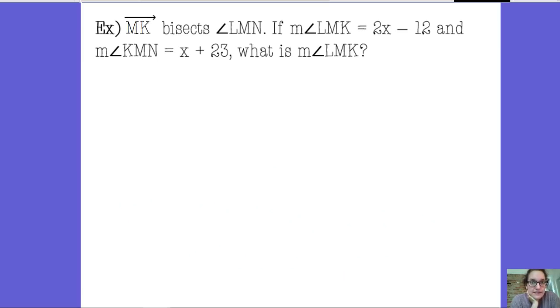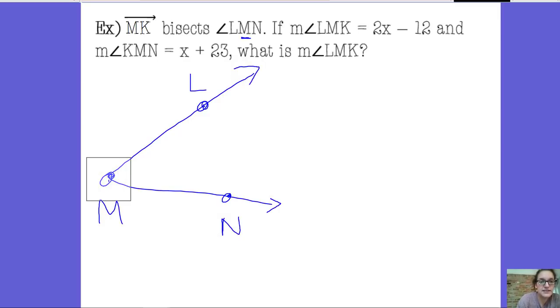So you're going to need to copy down this example into your notebook underneath that colored square, and then follow along with me and take notes. So it says Ray MK bisects angle LMN. So notice when I'm going to draw this angle, my middle letter is M, so that's going to be my vertex. LMN. Here's my angle, and then Ray MK, so my endpoint is M, and I'm going to extend it out through K. So Ray MK is bisecting angle LMN.